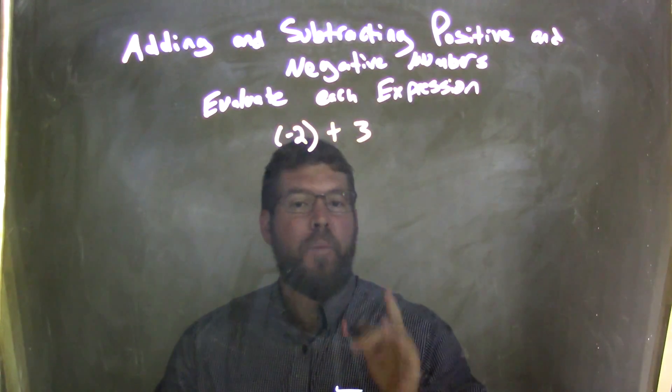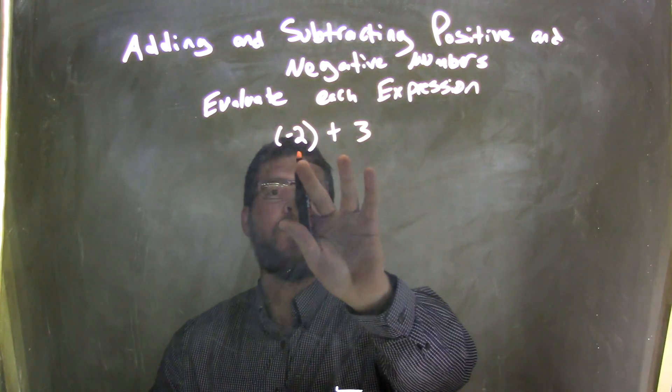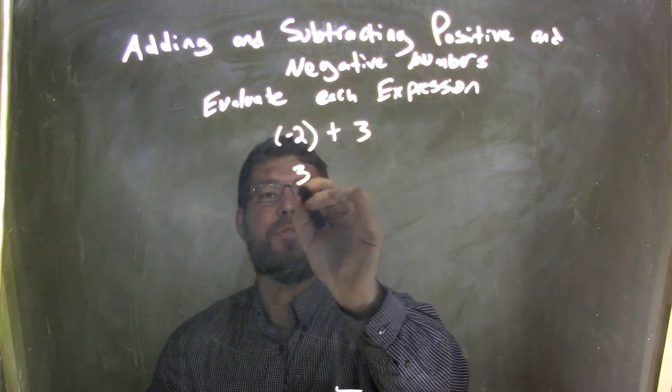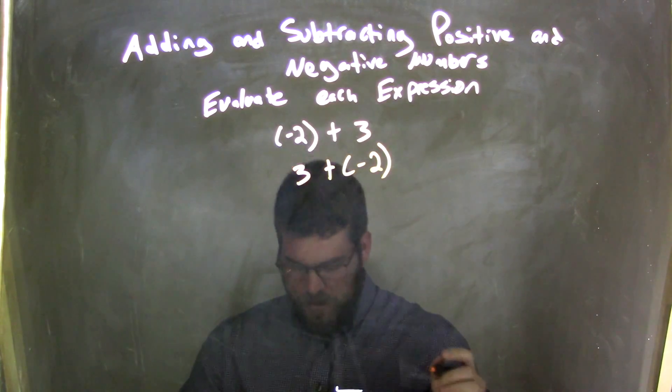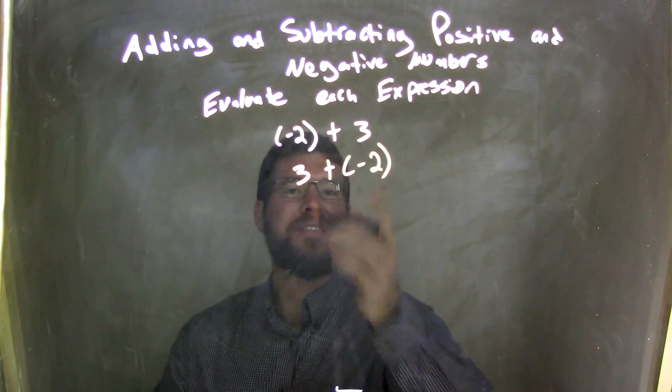We know by the commutative property we can flip around negative 2 and 3, so that's 3 plus negative 2. That's the same statement.